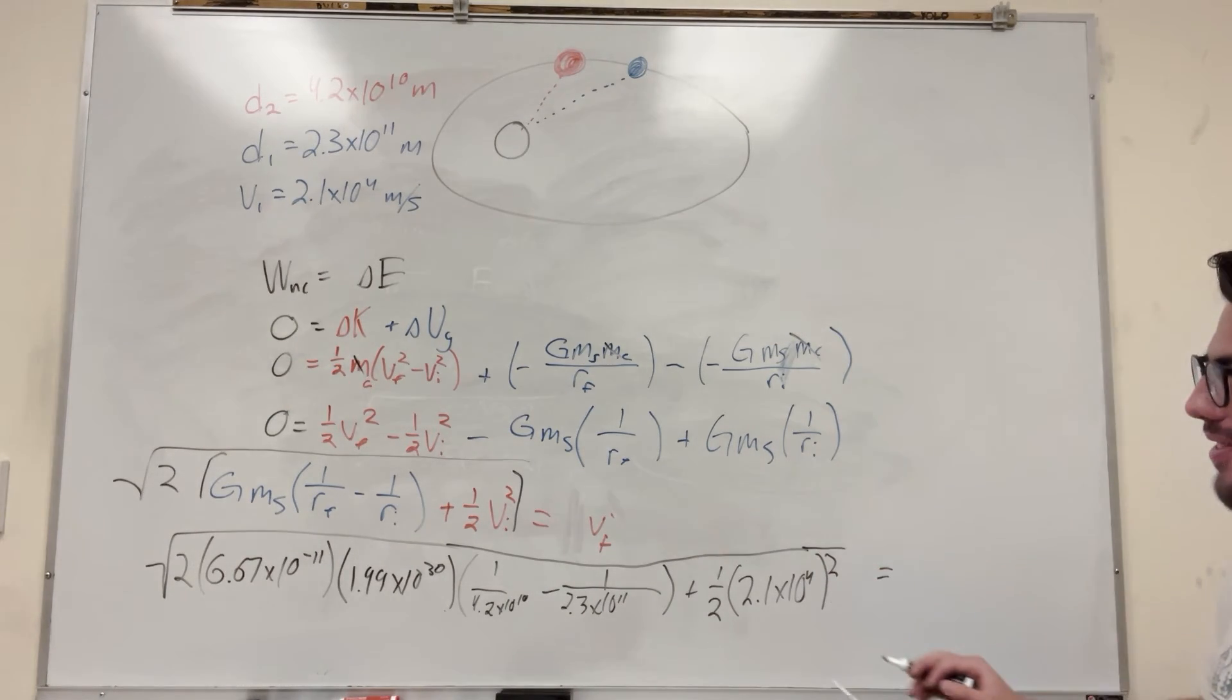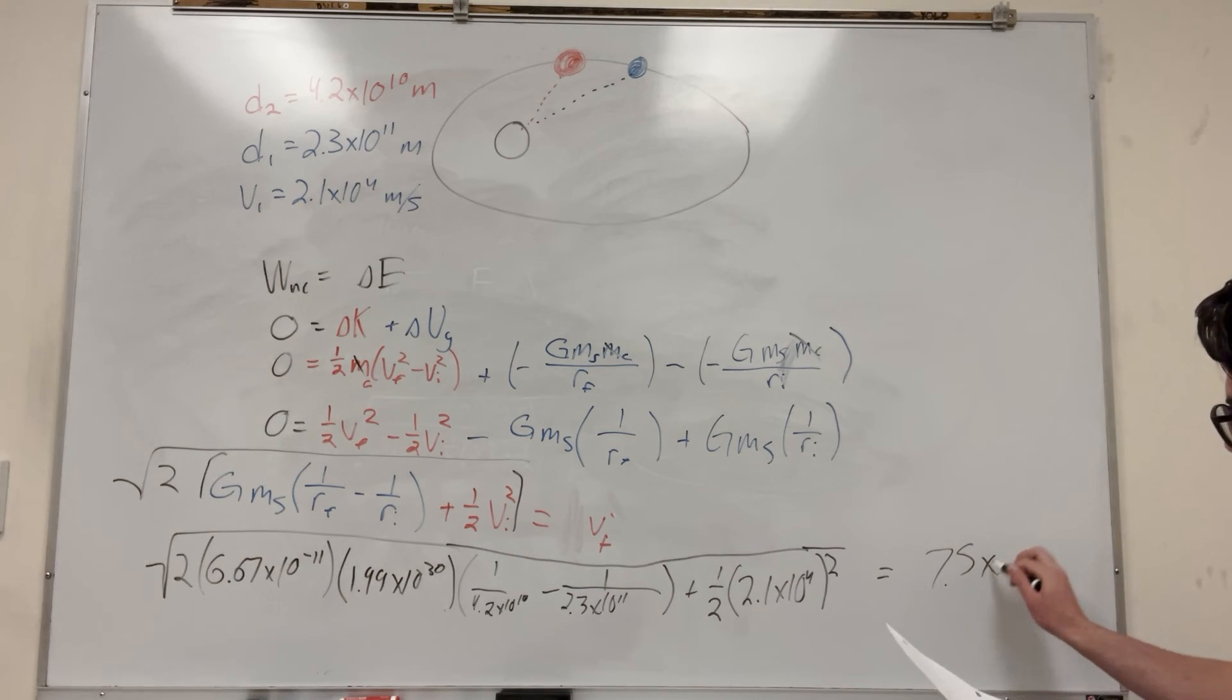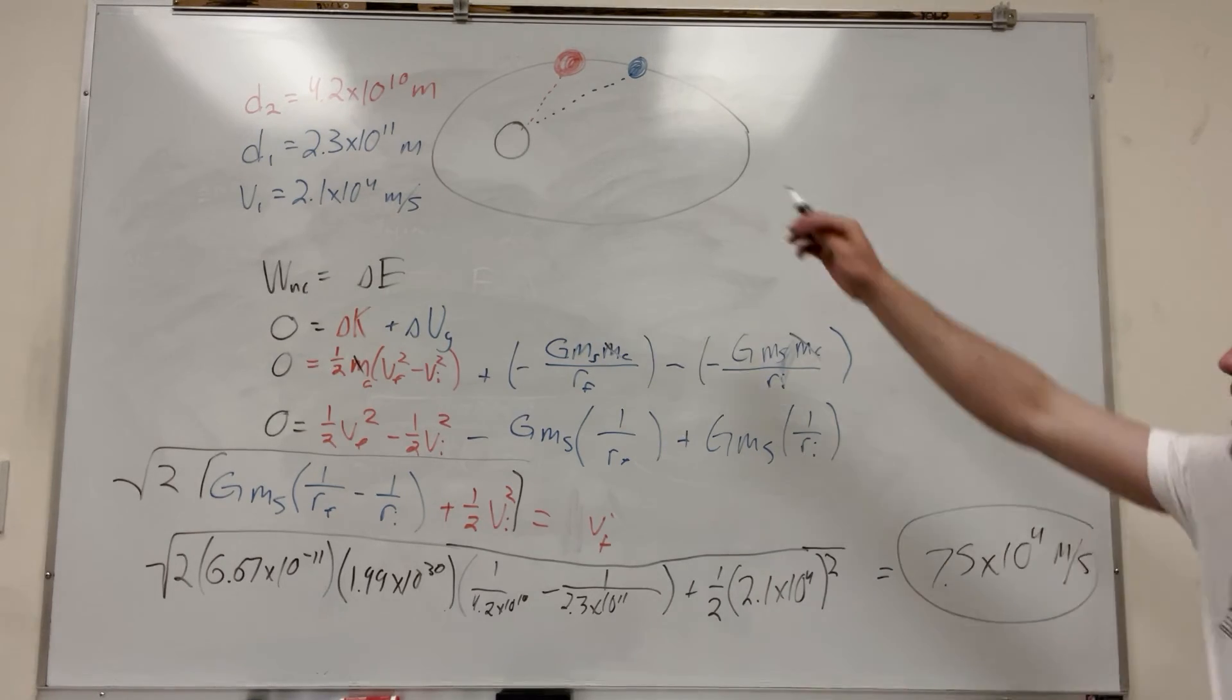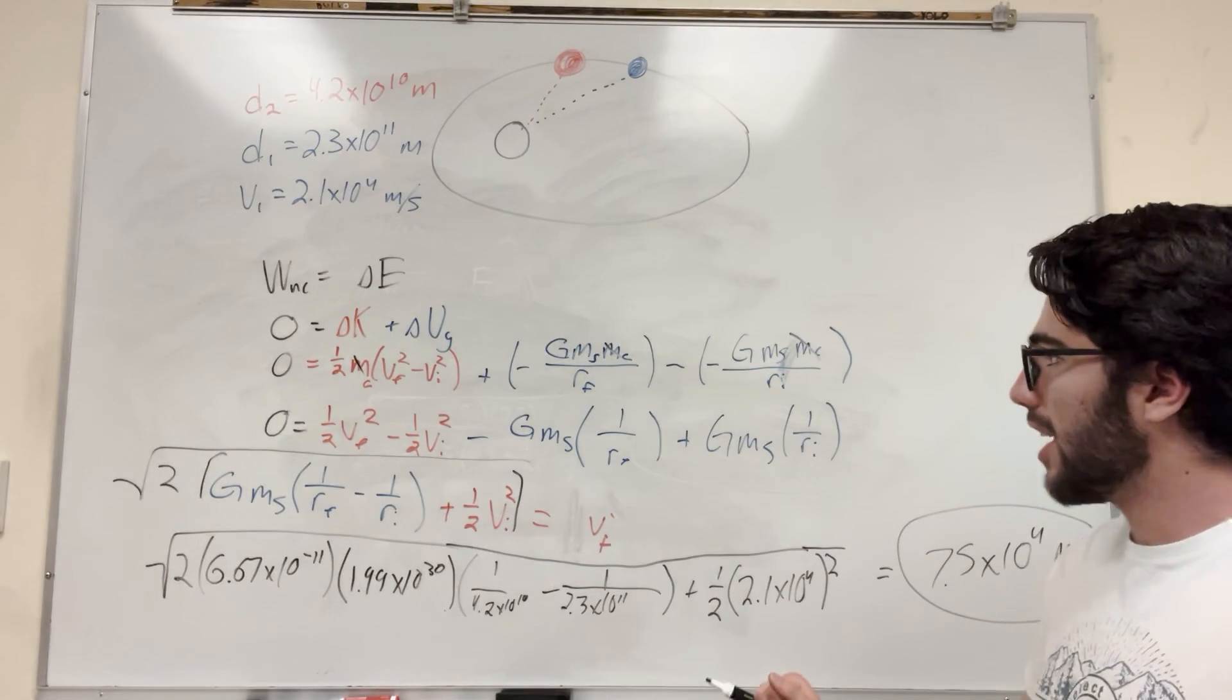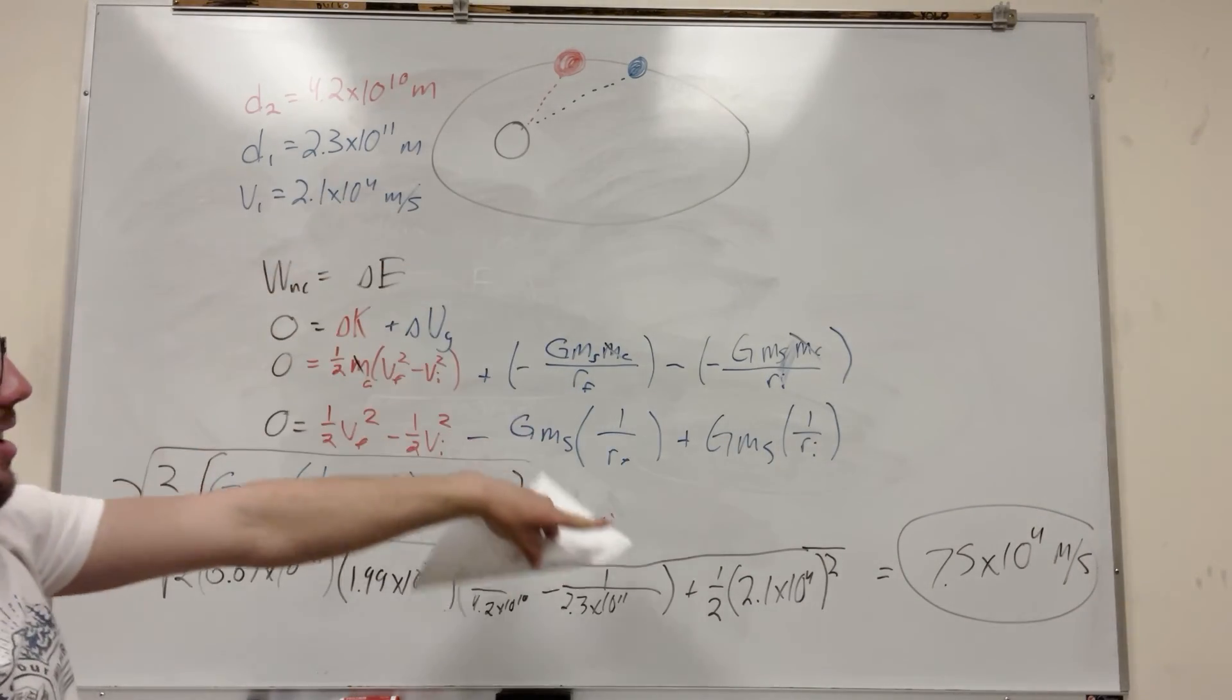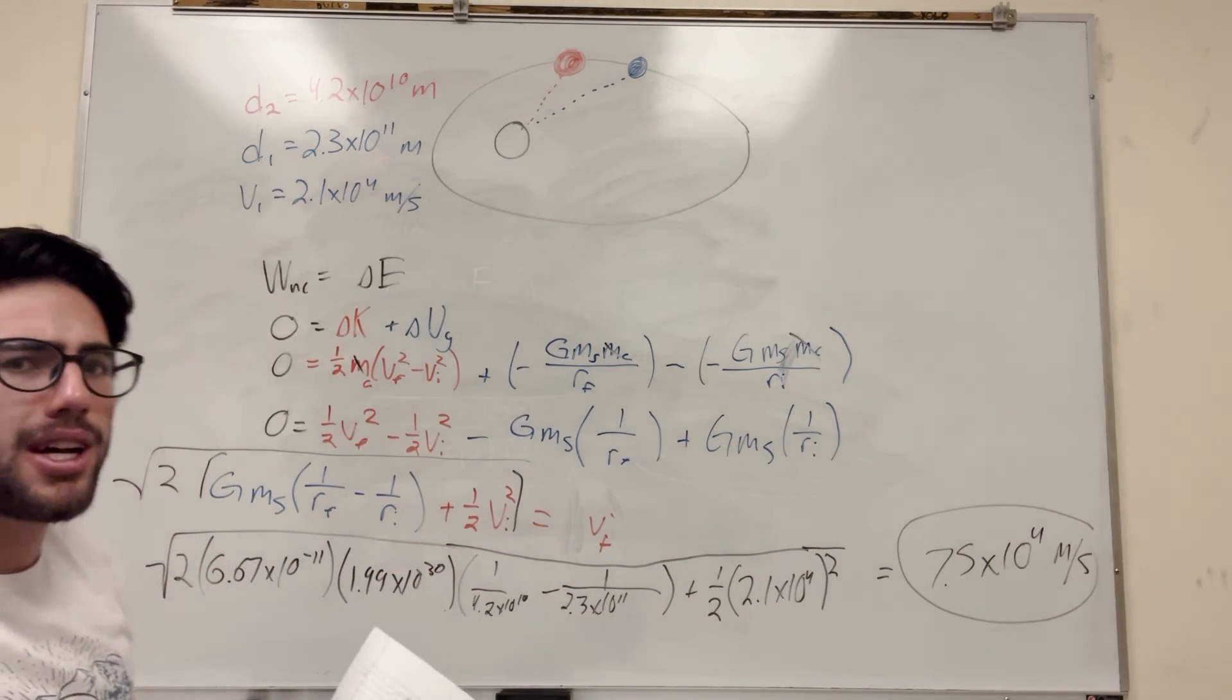And wow, look at that beautiful, beautiful, beautiful thing. And you're going to hit 7.5 times 10 to the 4 meters a second. That's final velocity. That's the velocity at the right point. And this makes sense, right? So we're starting at 2.1 meters a second, and we end up at 7.5 meters a second. So it goes up by like 3 times as much.